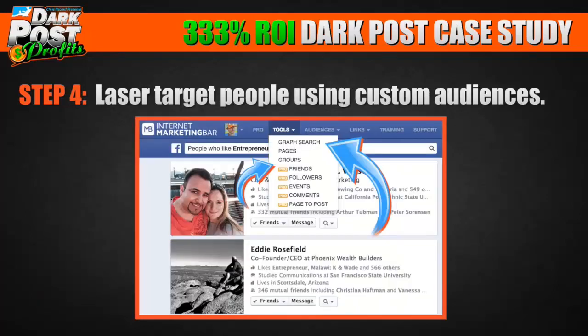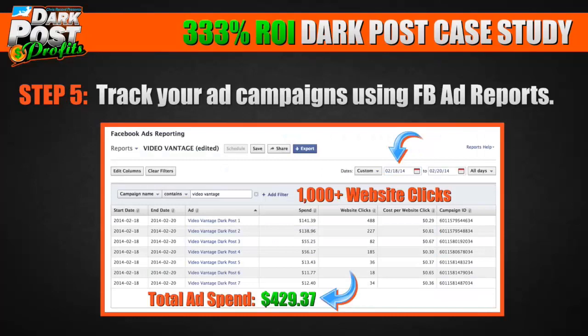Step number four: laser target people using custom audiences. I use a free tool called the Internet Marketing Bar — there are plenty of tools out there. In this tool, I do searches in graph search where I might get followers of pages or different groups. I'll get these audiences and advertise specifically to them, because this is really the bread and butter of selling stuff in the Facebook newsfeed.